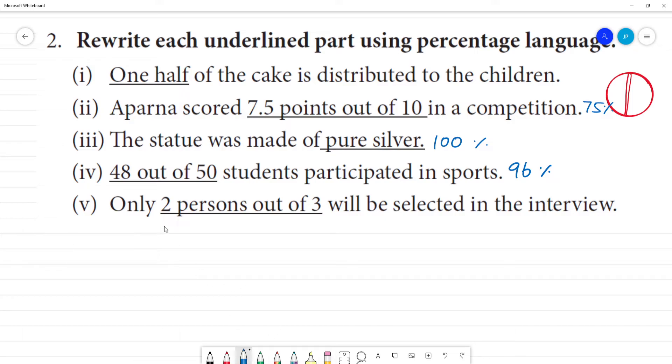Next, only 2 persons out of 3 will be selected. This will be 200 divided by 3. So what is 200 divided by 3? 6 threes are 18, remainder. Bring down 0. 6 threes are 18, remainder 2. So the percentage is 66, remainder 2 by 3. The answer is 66 2/3 percent of the people selected.